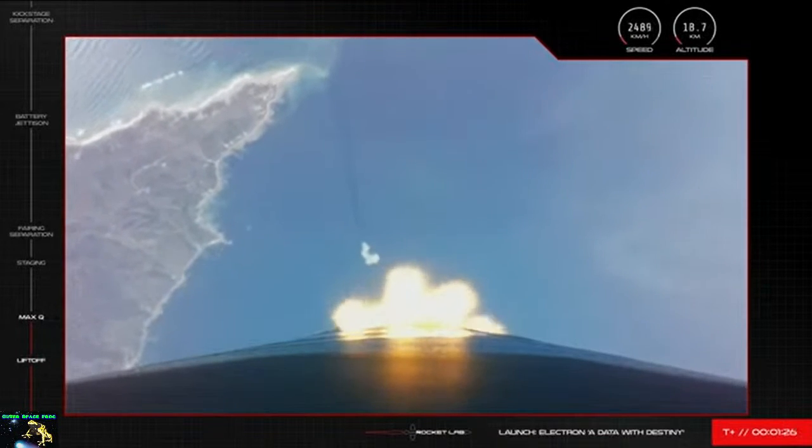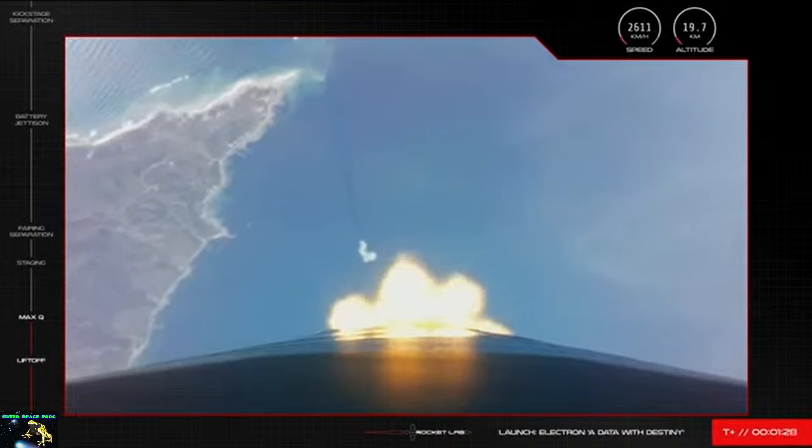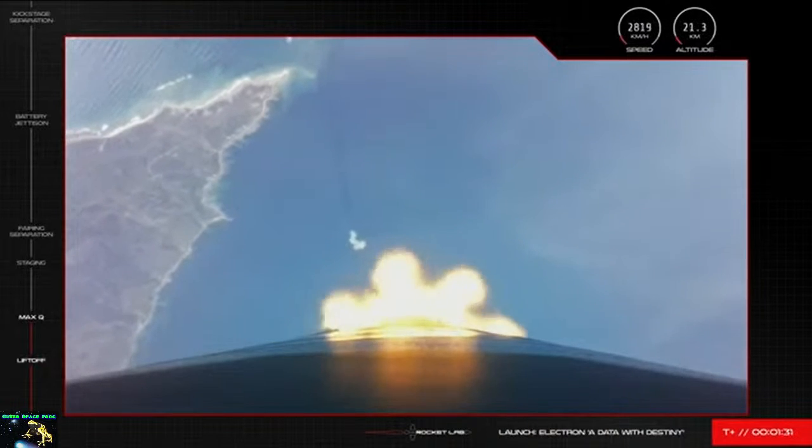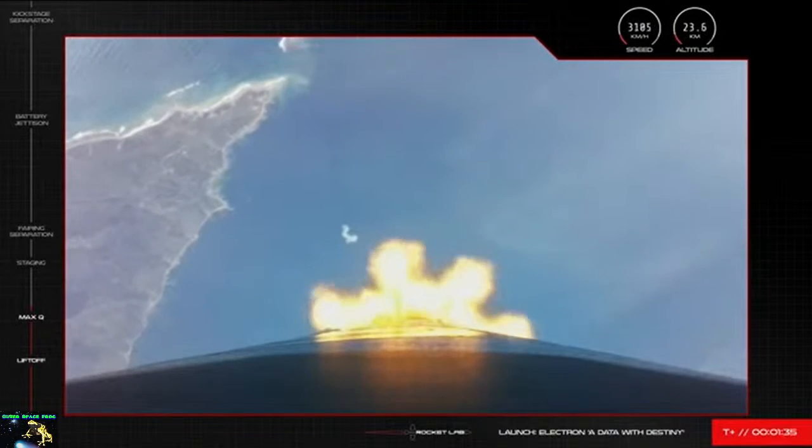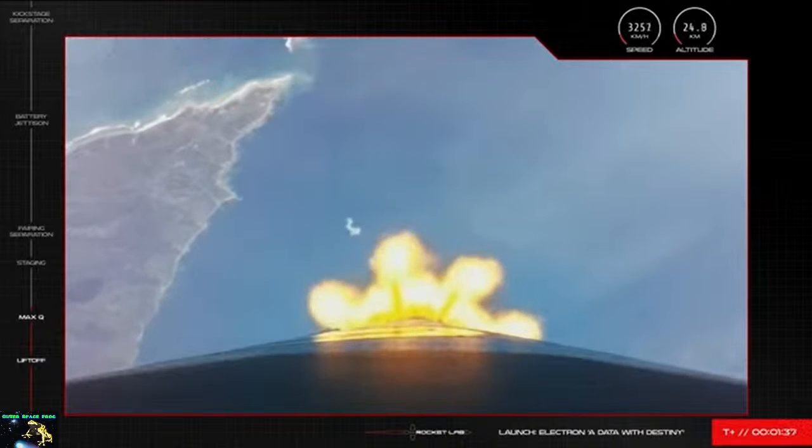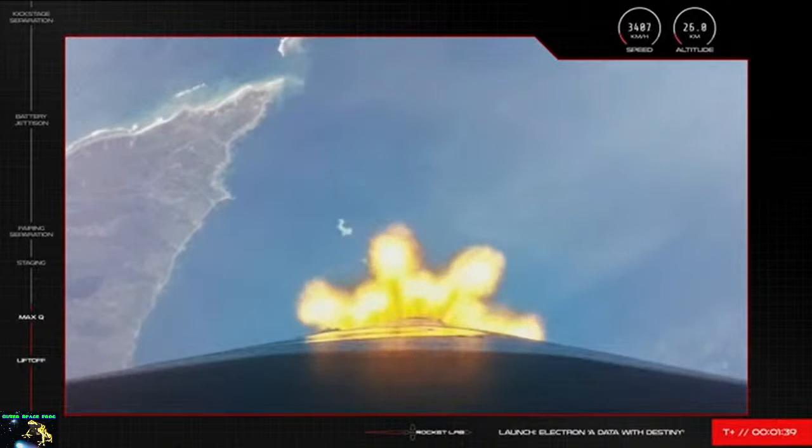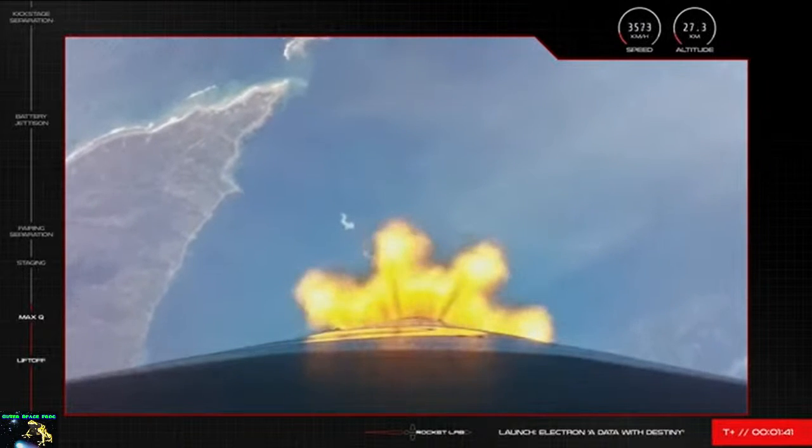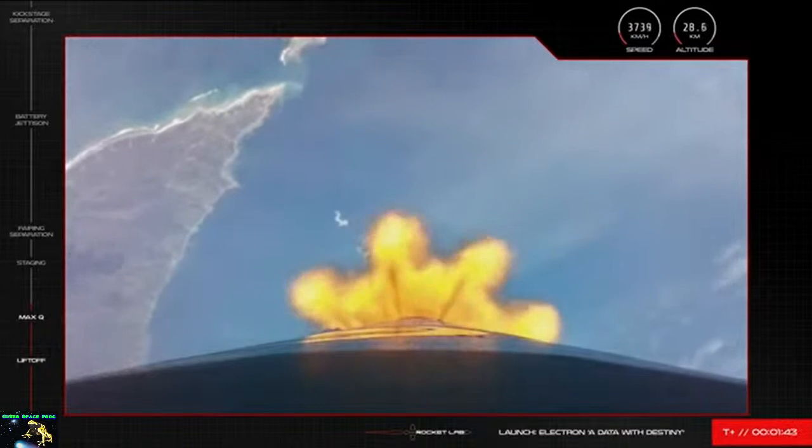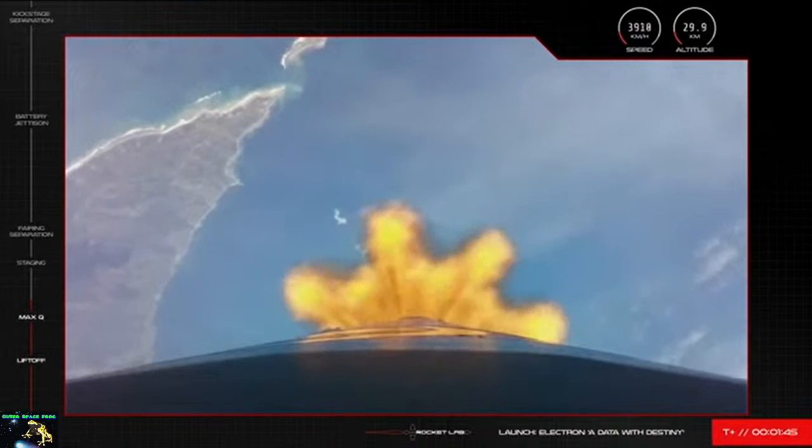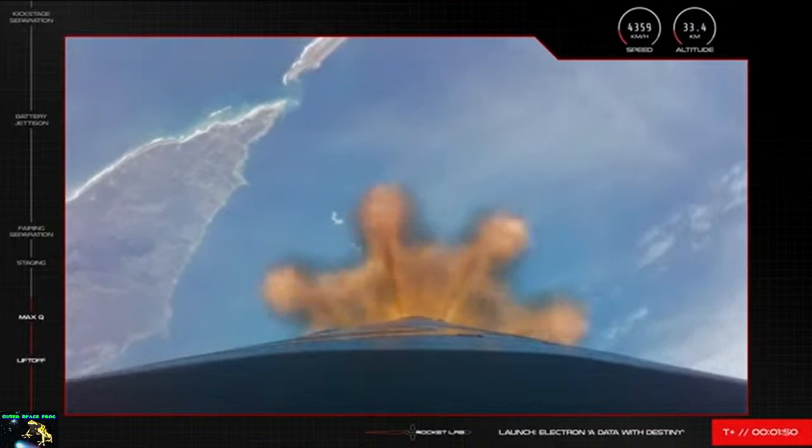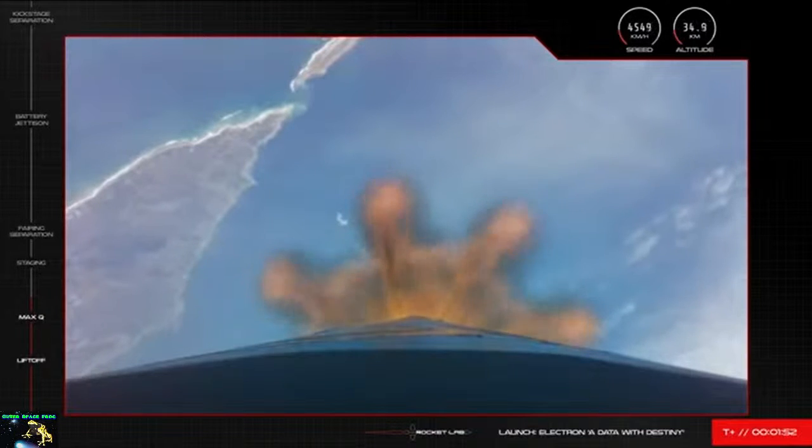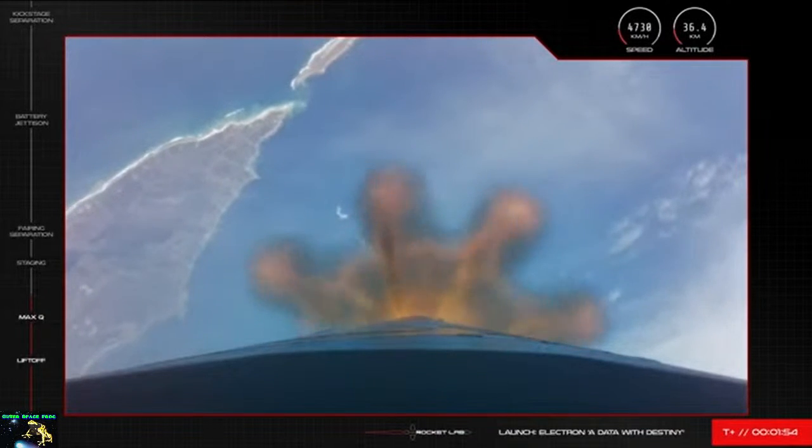The first stage's Rutherford engines are firing red hot and nominal as we come up to a vital sequence of events in the vehicle's launch procedure. Electron will slow down just a touch before shutting off its main engines, what's called main engine cutoff or MECO. This allows for the clean separation of the first stage from the second stage before the second stage's engine lights up and propels the vehicle's satellites onto orbit. We should both see those actions on screen and hear the call outs from our operators in Mission Control soon.